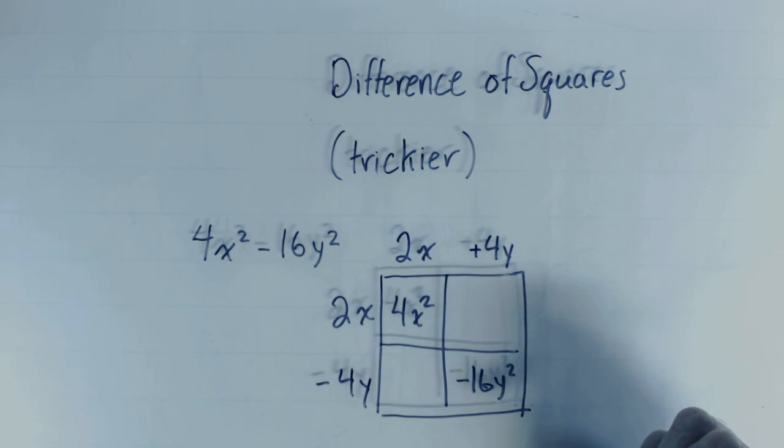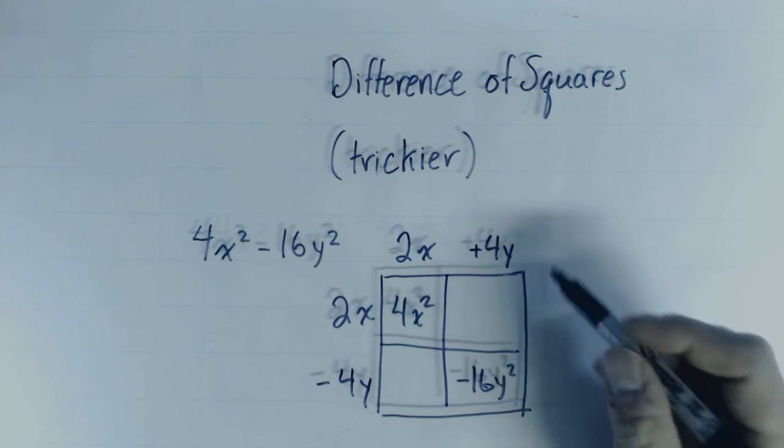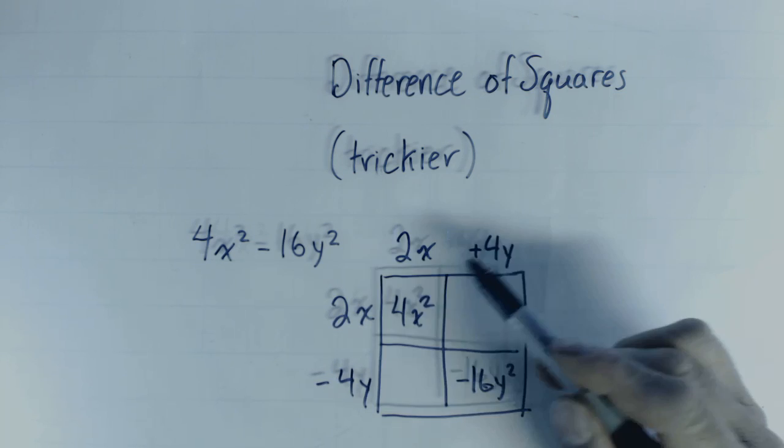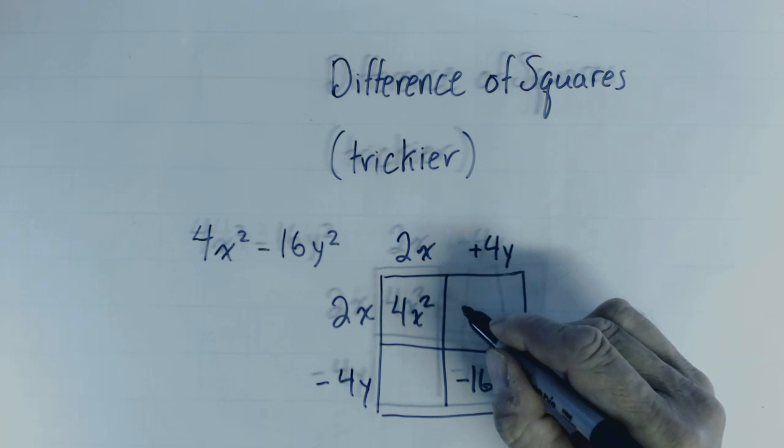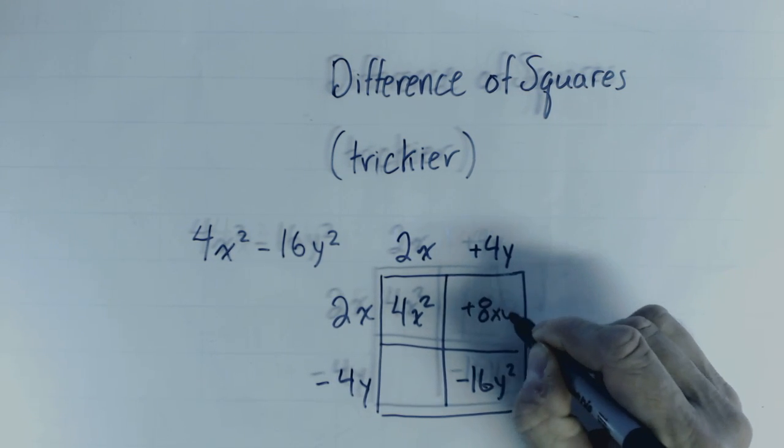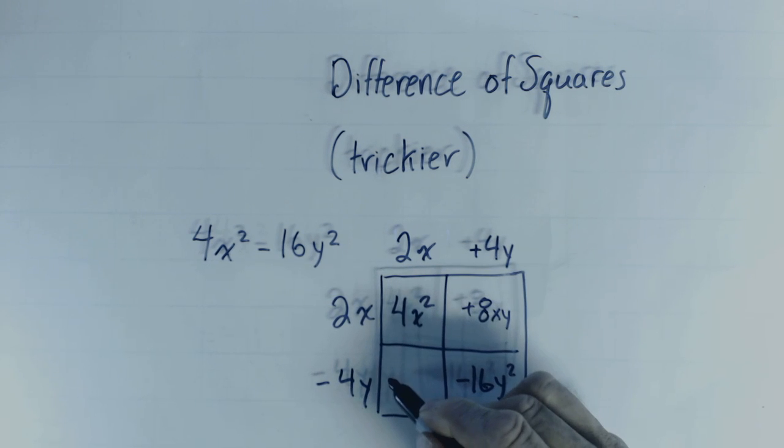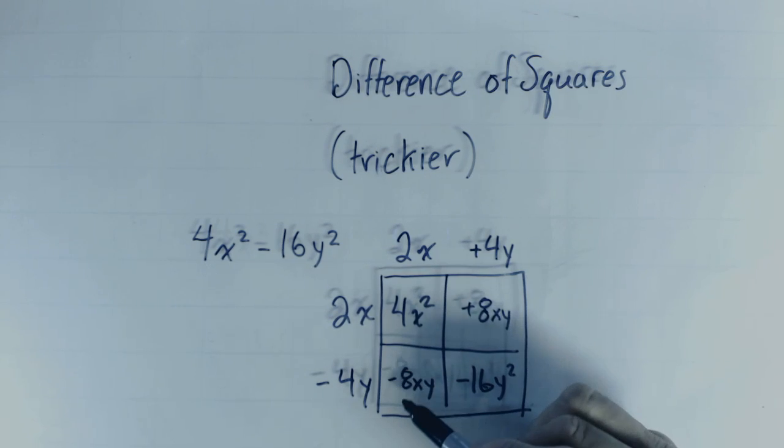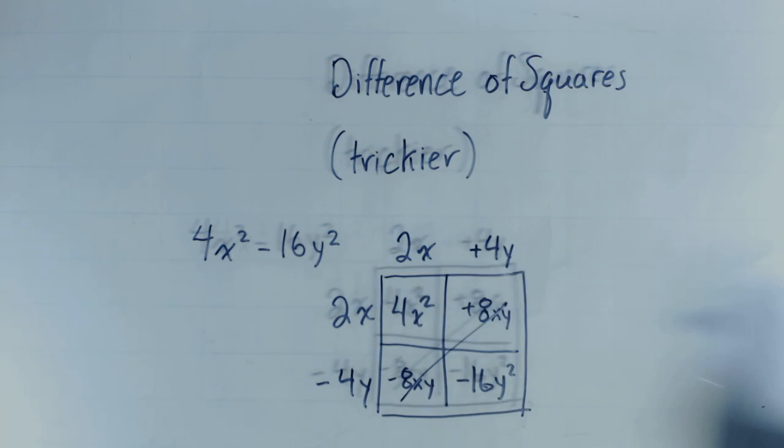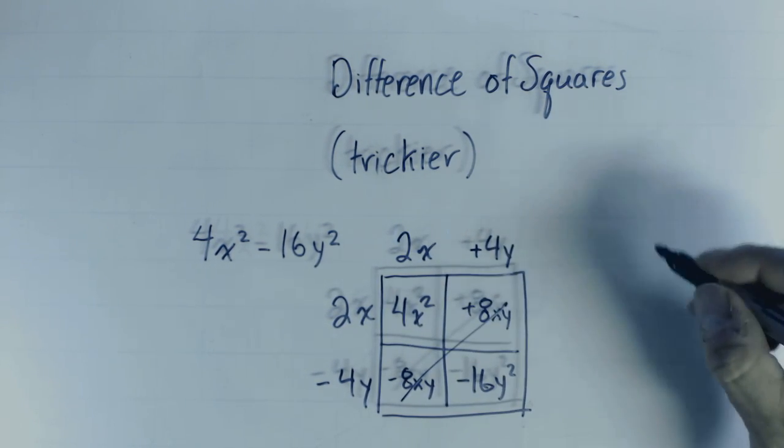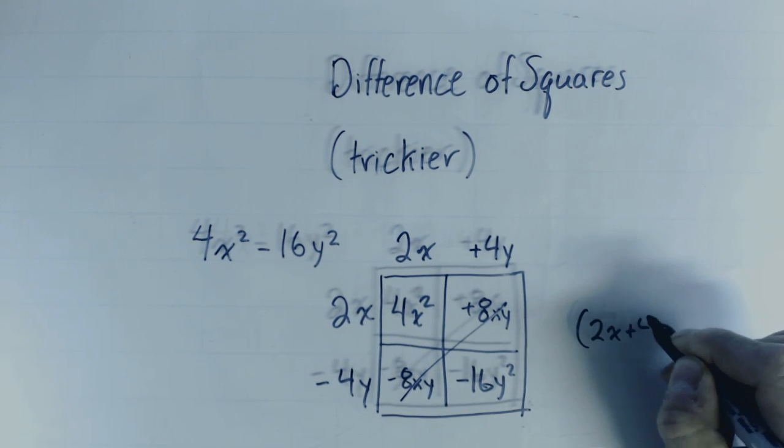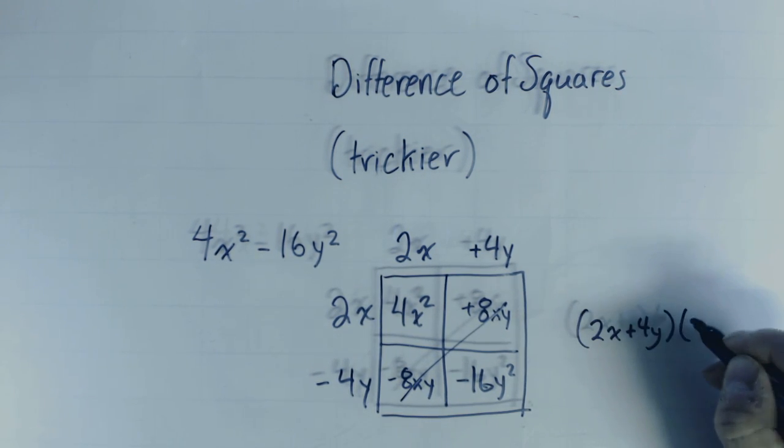If I want to satisfy myself that I have actually factored this, I can see that this is plus 8xy and this is minus 8xy, so those two terms would cancel and I would be left with this. It's a relatively easy way to factor the difference of squares just by inspection.